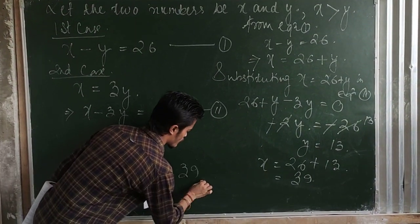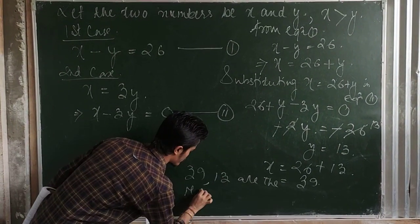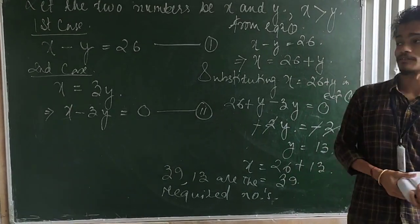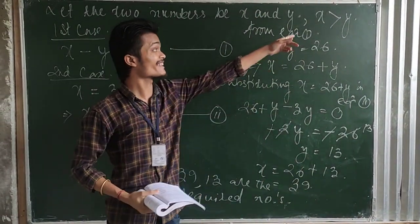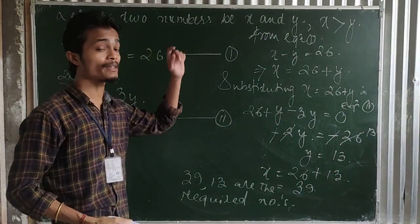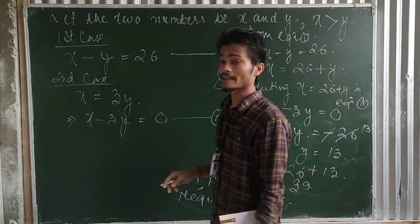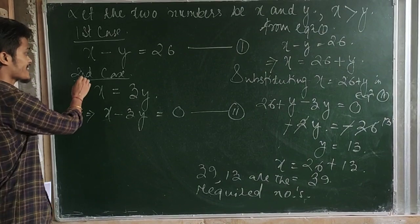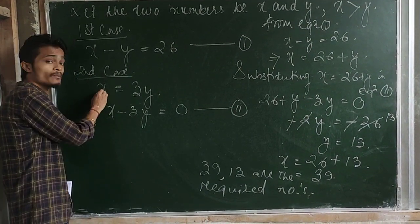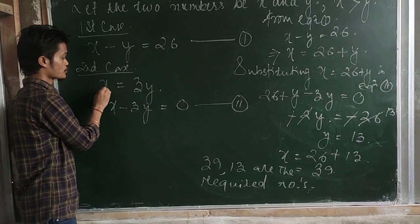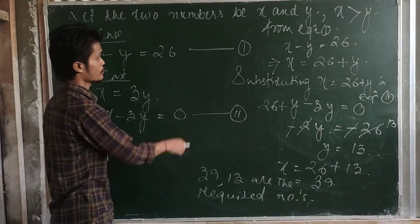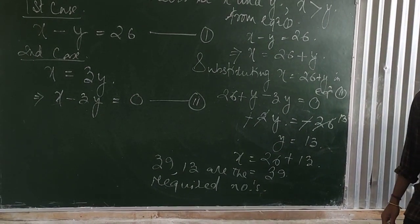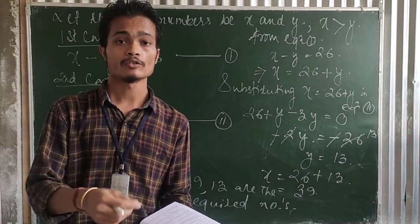So 39 and 13 are the required numbers. Let us revise: we have two numbers x and y, where x is greater than y. Since x is greater than y, and the difference of the two numbers is 26, greater minus smaller gives x minus y equals 26 as equation 1. In the second case, one number is three times the other, so x equals 3y, giving x minus 3y equals 0 as equation 2. Using substitution we found x equals 39 and y equals 13.